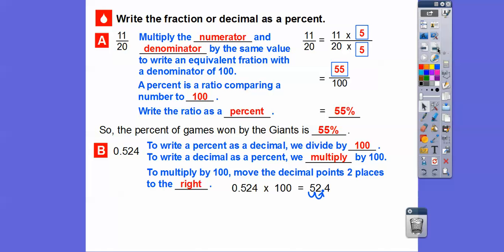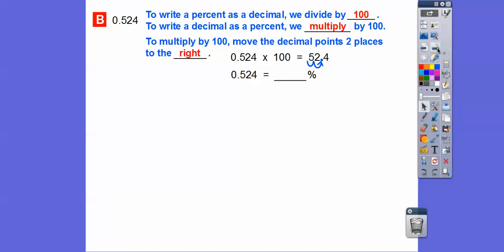So the 0.524 becomes 52.4, and we'll put a percent there, so 52.4%. So the percent of games won by the Dodgers is 52.4%.